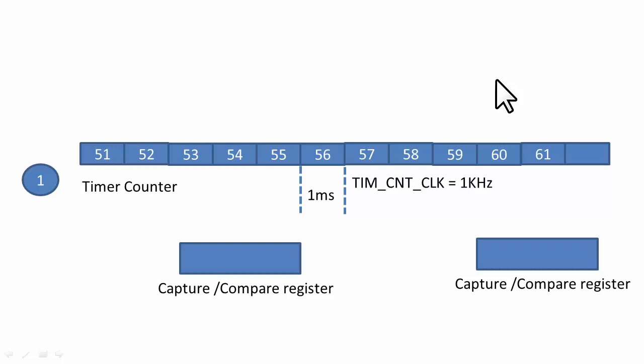Let's assume that the timer count clock is 1 kilohertz. So that means the resolution of the counting will be 1 millisecond. Now let's say you apply an input signal to the input channel of the timer.